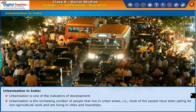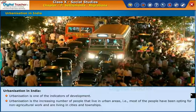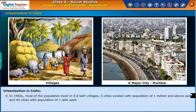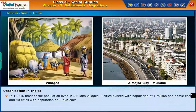Most of the people have been opting for non-agricultural work and are living in cities and townships. In the 1950s, most of the population lived in 5.6 lakh villages. Five cities existed with a population of 1 million and above each, and 40 cities with a population of 1 lakh each.